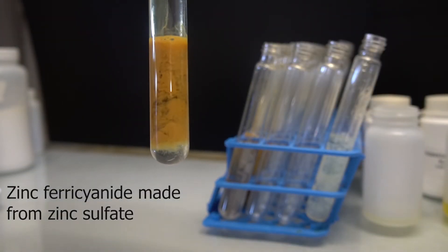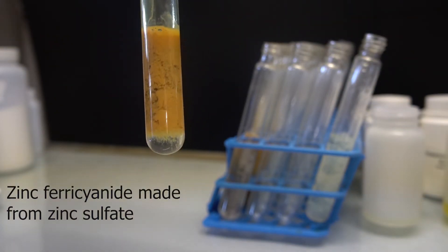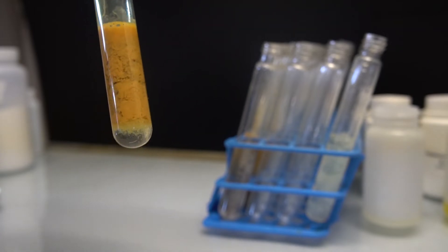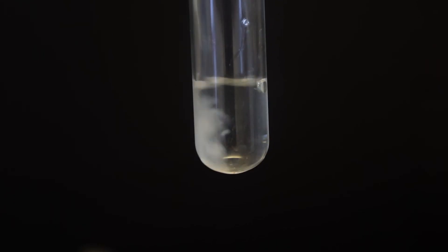Here is the zinc ferricyanide in the test tube. Then, just as a second confirmation, we dissolved zinc powder in hydrochloric acid and repeated the tests. Again, we produced zinc ferrocyanide, which this time was white, and zinc ferricyanide, which again was orange-brown.